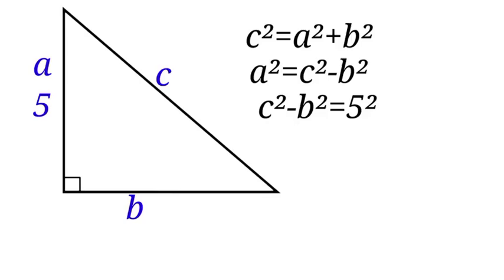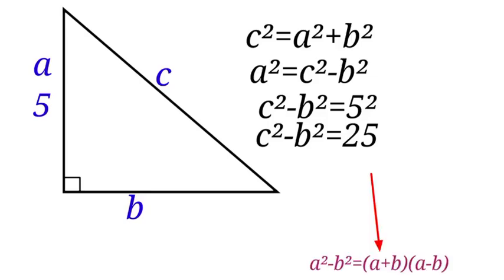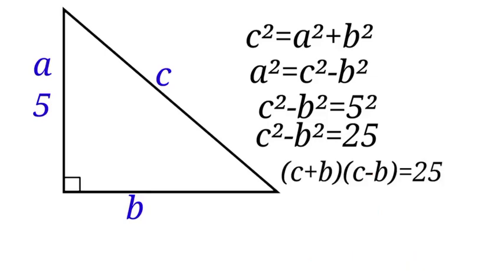Now a is 5, so we have c² - b² = 5², which equals c² - b² = 25. Using this identity, (c + b)(c - b) = 25.